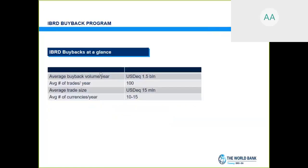To wrap up, here are some statistics of our buyback program over the last 10 years. On average our volume has been 1.5 billion US dollars per year, with about 100 transactions on average — ranging from 70 to 250 transactions. The average trade size is 15 million dollars, but we've seen sizes of 200 million and 1 million dollars as well. IBRD has issued bonds in over 50 currencies, and we see approximately 10 to 15 currency inquiries on an annual basis.